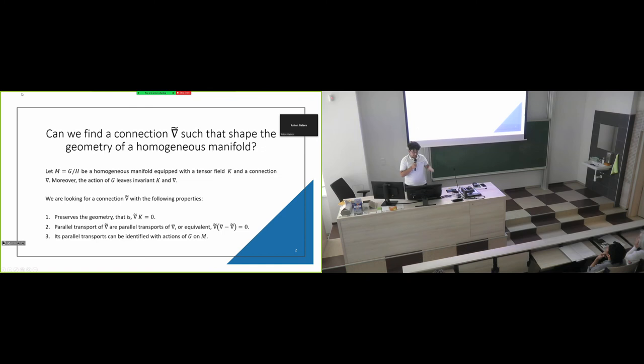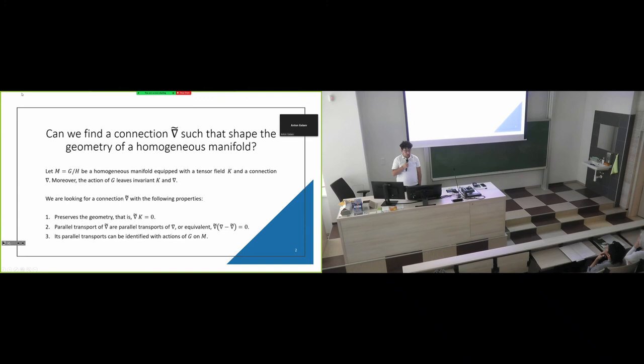Let's say the setup. We have a homogeneous manifold equipped with a tensor K and a connection NABLA. This is not necessarily the Levi-Civita connection. The action of G leaves invariant K and NABLA. So we are looking for a connection with the following properties: it preserves the geometry — that is, the parallel transport preserves the tensor — and the parallel transport of this connection equals the parallel transport of the other connection, or equivalently it satisfies this equation.